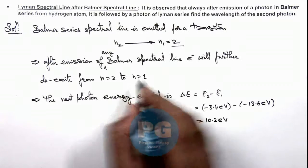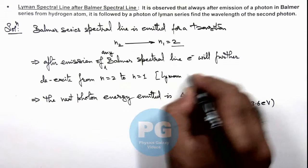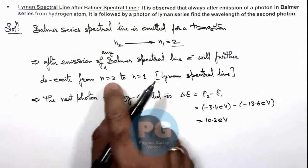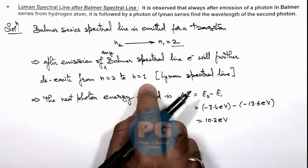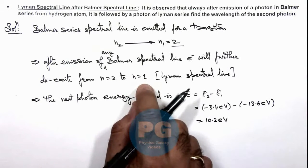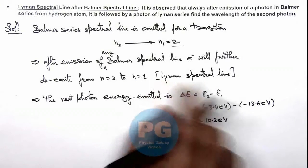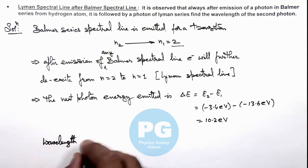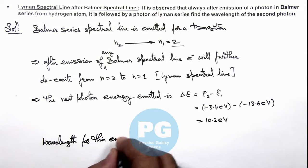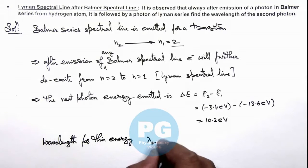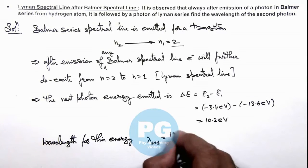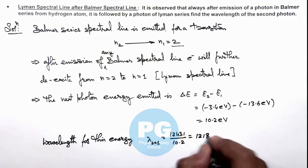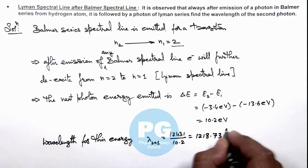So this n equal to 2 to n equal to 1 transition is a Lyman spectral line — in fact, this is the first line of the Lyman series for the 2 to 1 transition. As we know, from any higher orbit to n equal to 1, when an electron de-excites, the spectral line emitted falls in the Lyman series. If we calculate the wavelength for this energy, lambda corresponding to the 2 to 1 transition is 12431 divided by 10.2, which numerically gives us 1218.73 angstroms — which is the result of this problem.